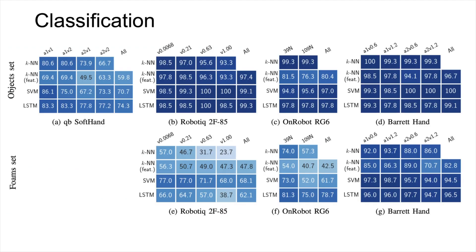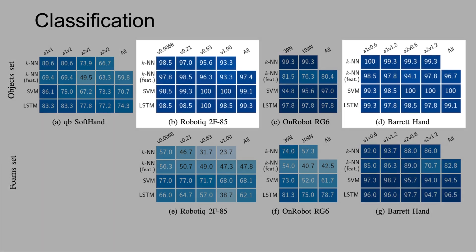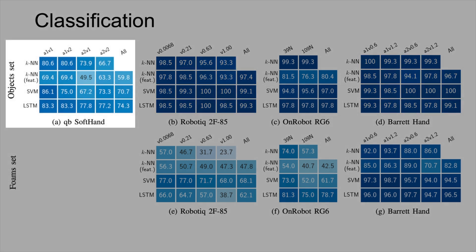On the object set, the Barrett hand and Robotiq 2F-85 achieved nearly 100% accuracy. In contrast, the QB soft hand performed comparatively worse.